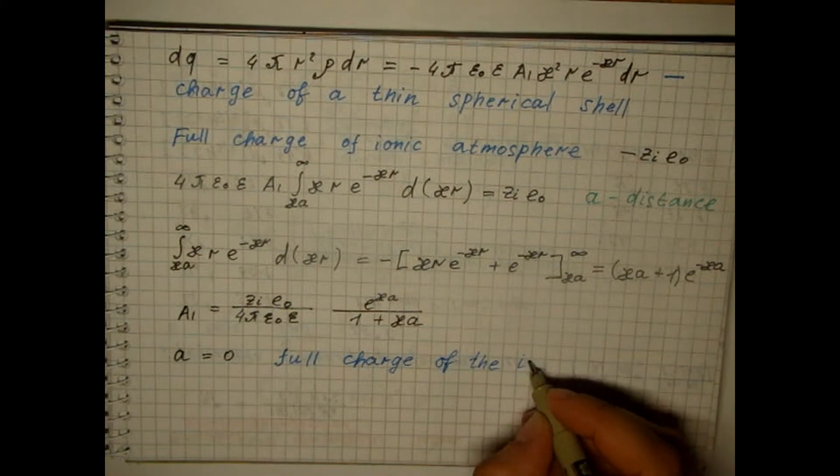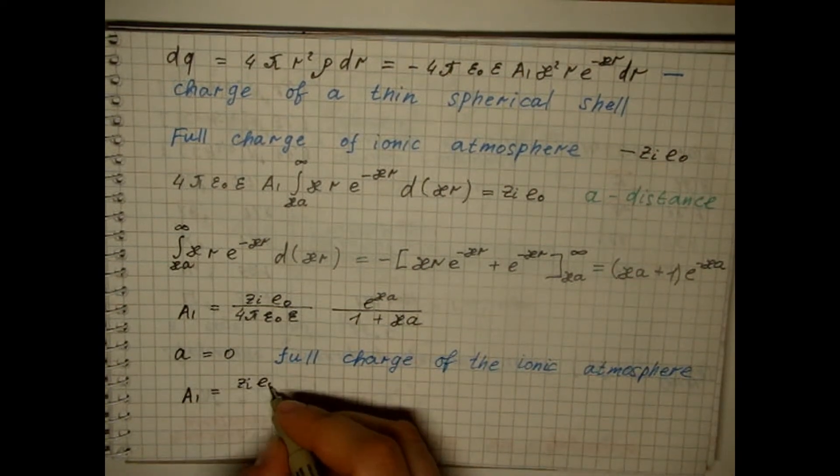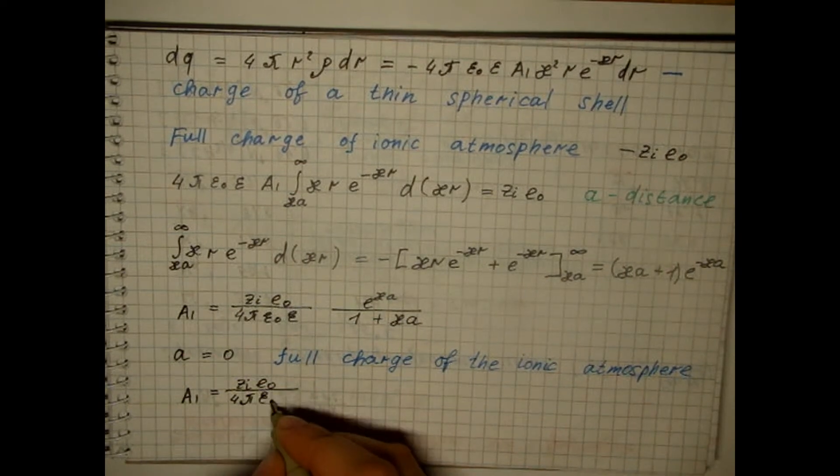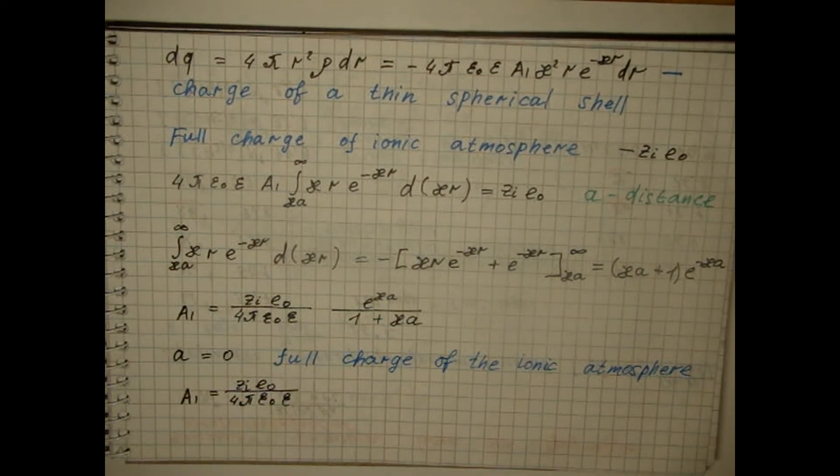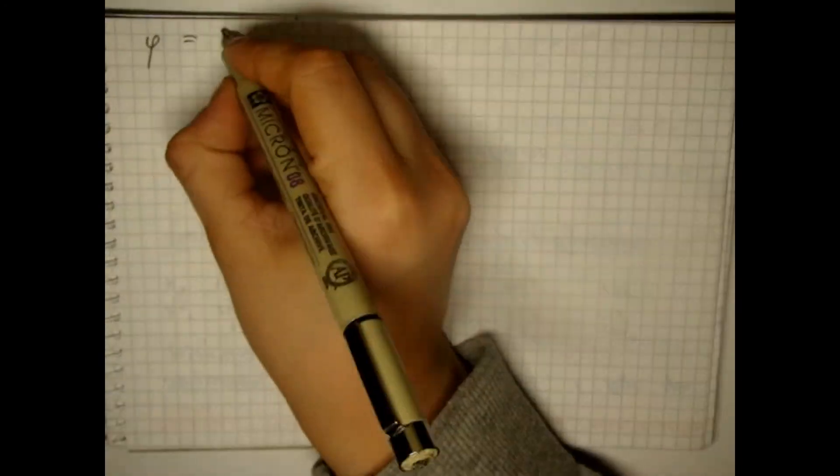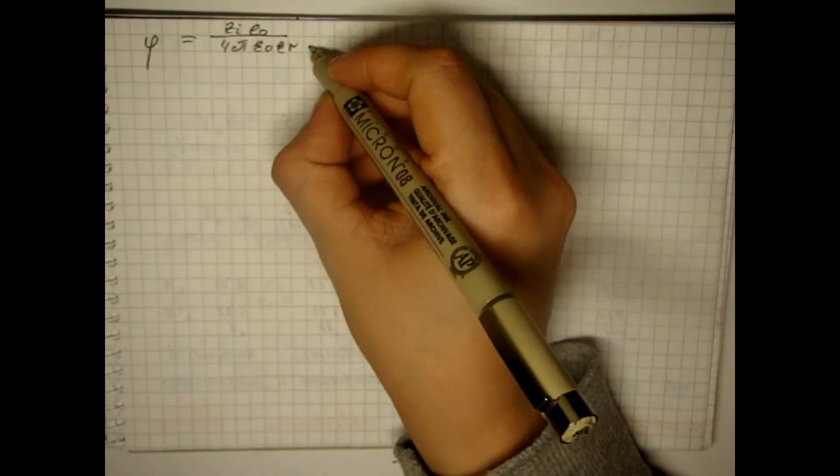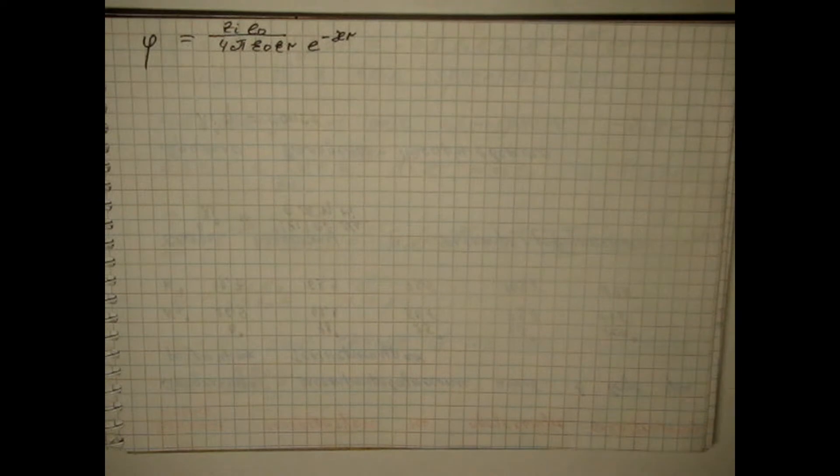If we assume that the ions have point sizes, then the first approximation of the Debye-Hückel theory corresponds to the condition of point ions. To calculate the ion-ion interaction, it is not the general potential that is important, but its part that is created by the ionic atmosphere at the location of the central ion. This potential is called the potential of the ionic atmosphere.